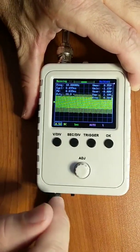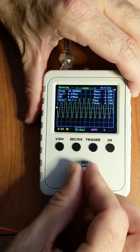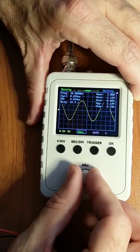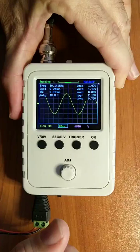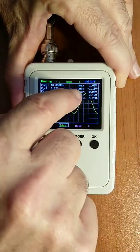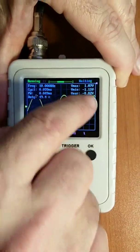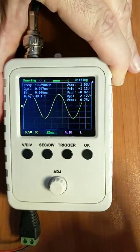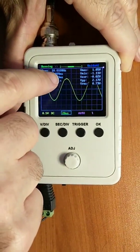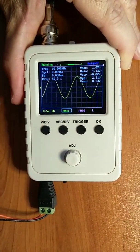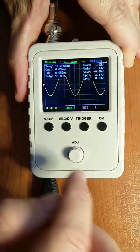There we go. Seconds per division, I have to tune this down a bit to show the waveform. As you can see here, it shows max is one volt, minimum is minus one volt, and peak-to-peak is 2.1 volts, which is pretty accurate. The frequency is 10 kilohertz, which is the frequency of my wave generator.